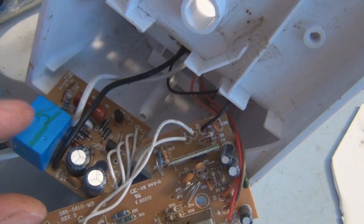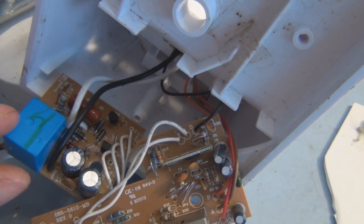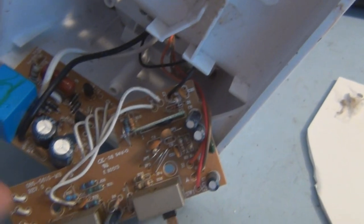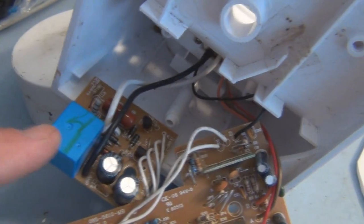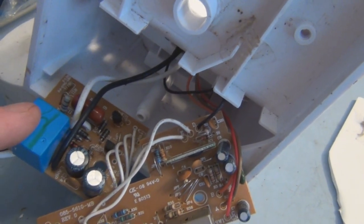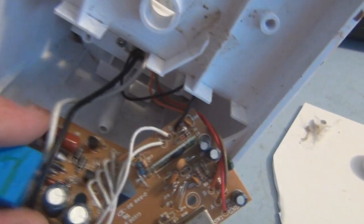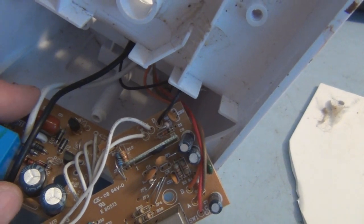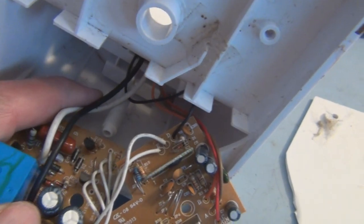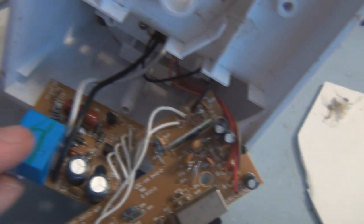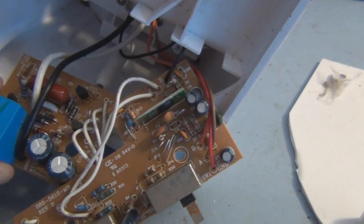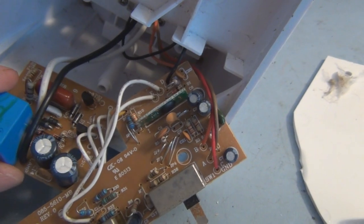So this relay here receives a logic level that energizes this to turn the light on. So you've got the AC input and then the AC gets applied to the light when this relay gets activated. So there's a full bridge rectifier in here.